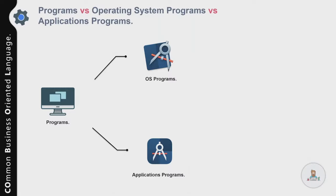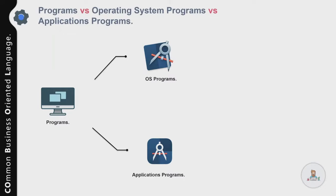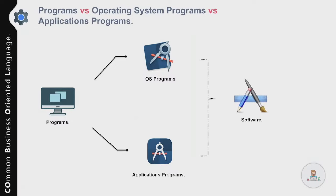An application program operates on input data and converts it into meaningful information. For example, if you want to generate a report listing the number of failed transactions, your application program would read transactional data from an input file and translate that data into a report outlining the failed transactions. The term used to describe all types of programs is called software.